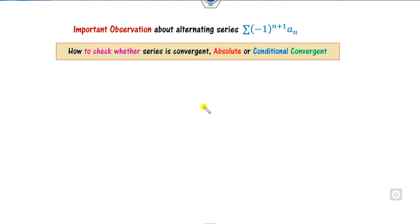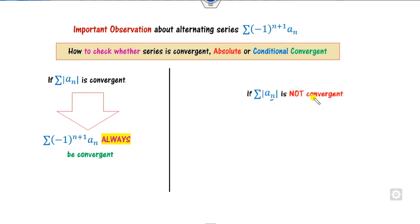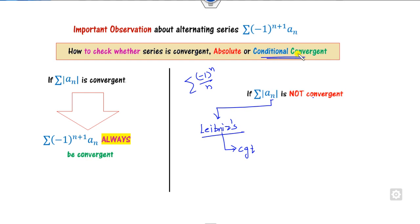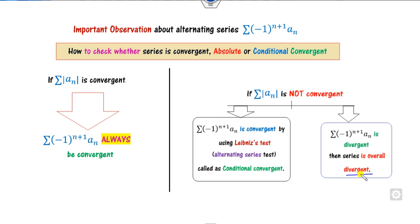From this, here is an important remark. To verify whether an alternating series is absolutely or conditionally convergent, you always start with |aₙ|. If you prove that Σ|aₙ| is convergent, then the series converges absolutely. On the other hand, if Σ|aₙ| is not convergent, then apply the Leibniz test. If the series is convergent by the Leibniz test, we call it conditionally convergent; otherwise it is divergent.